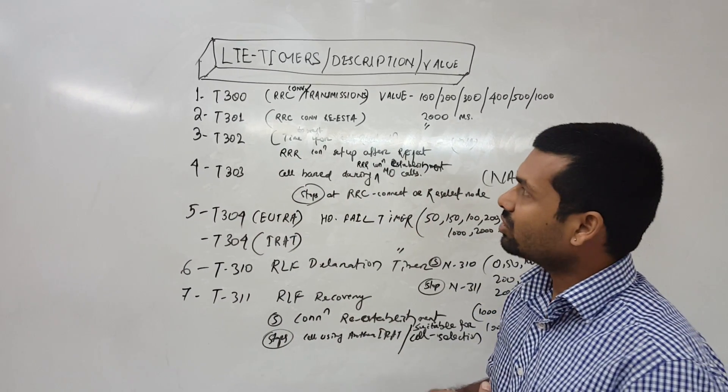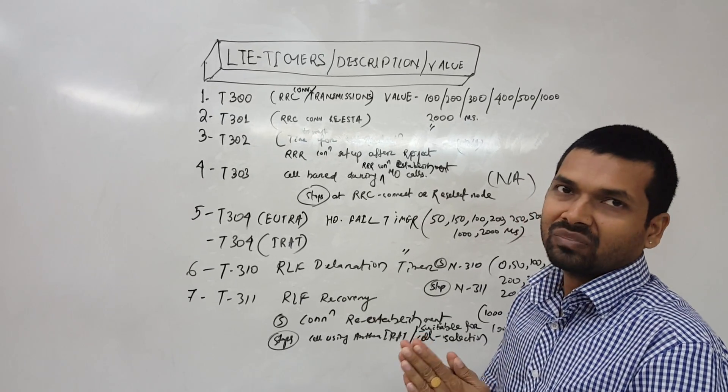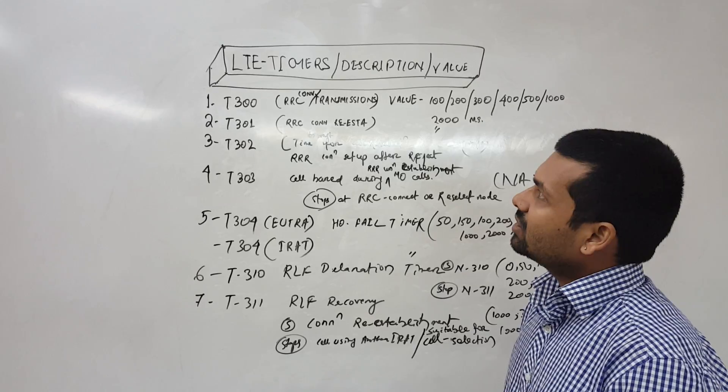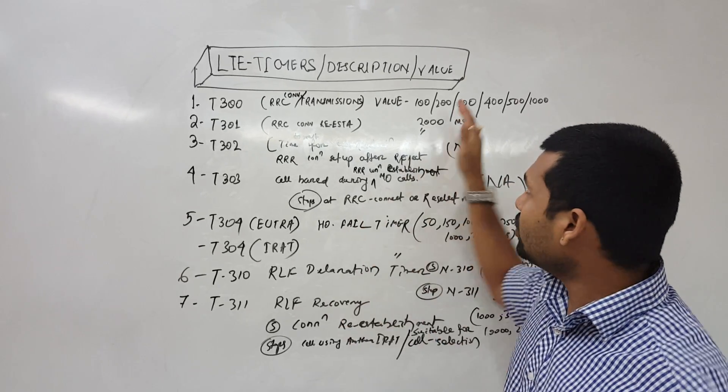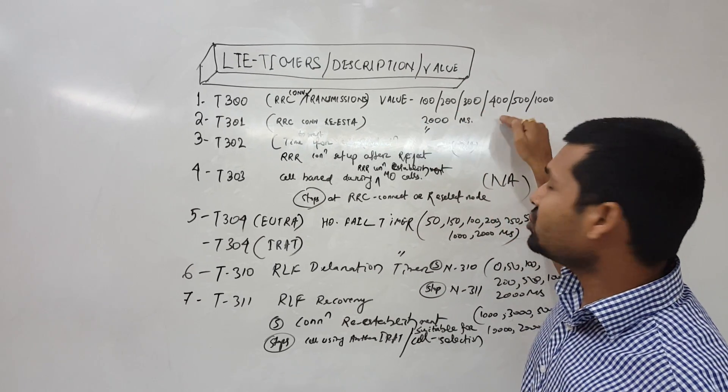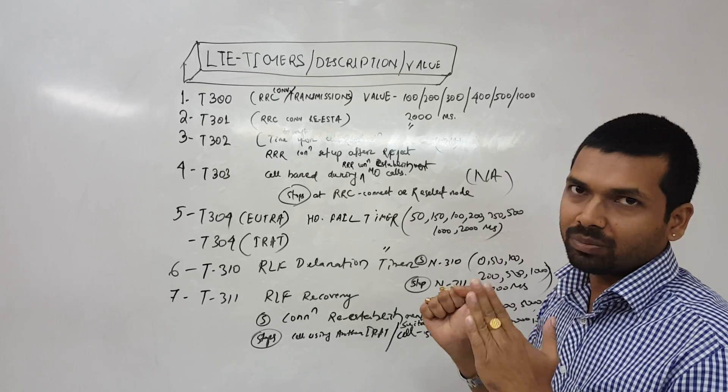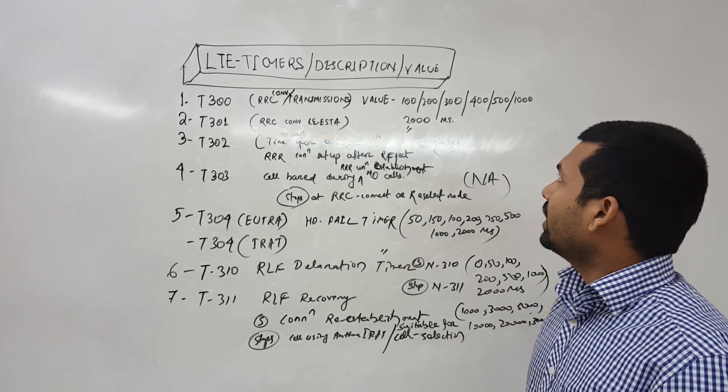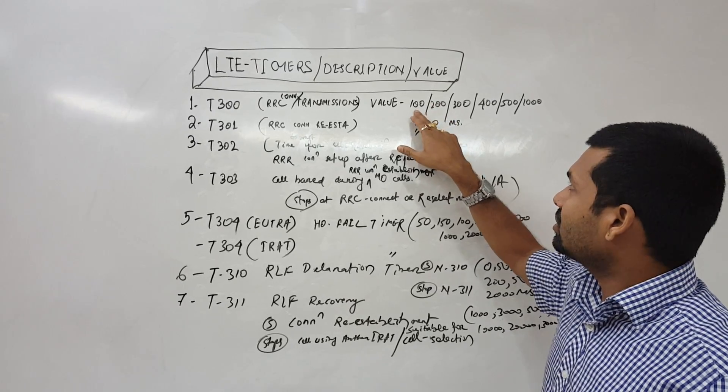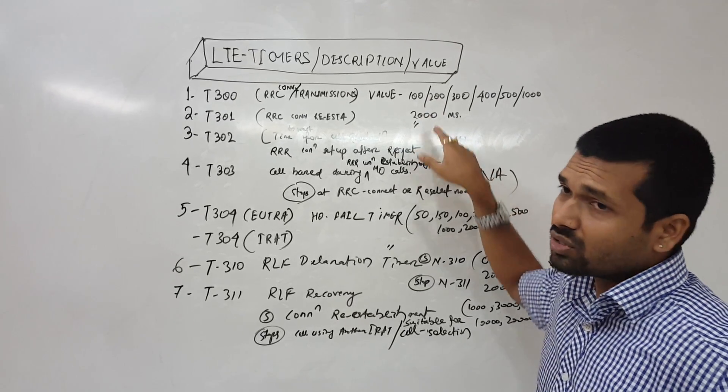T300, this is used for RRC connection or the RRC transmissions. The value, I have written the range. What the value should be is decided by the operator or the customer. So it may be set from 100 milliseconds till 2000 milliseconds.